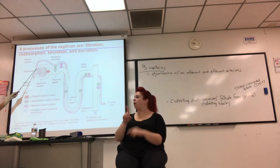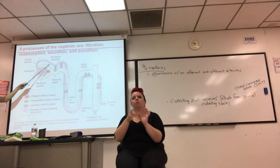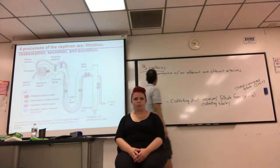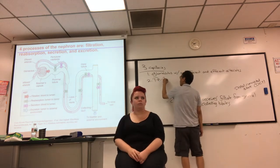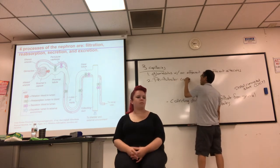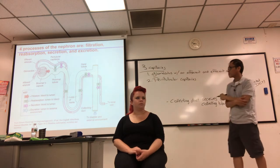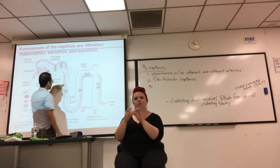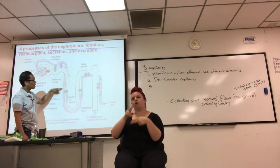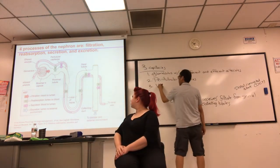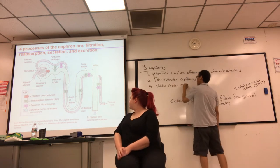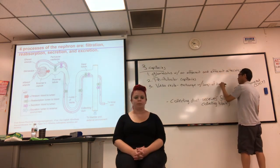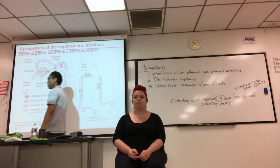The efferent arteriole gives rise to other capillaries called peritubular capillaries, which exchange with other parts of the tubule. And there's a capillary associated with the loop of Henle called the vasa recta. So I'm writing: the vasa recta exchange with the loop of Henle. You've got three capillary beds performing all those other functions.